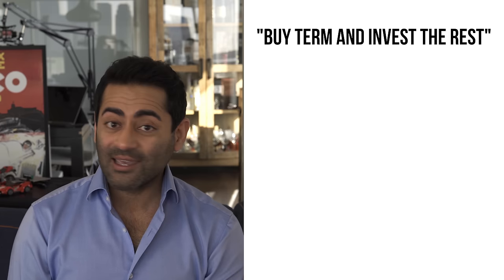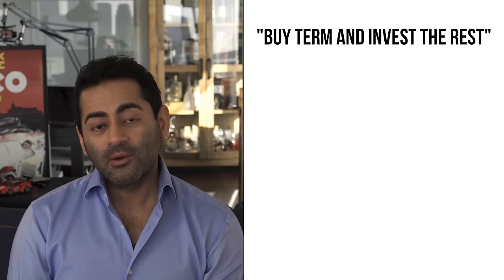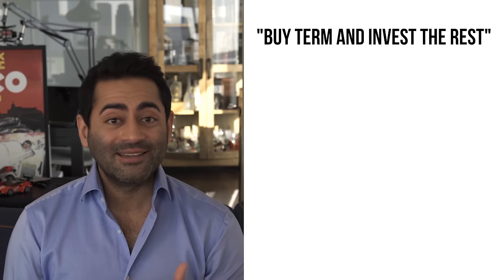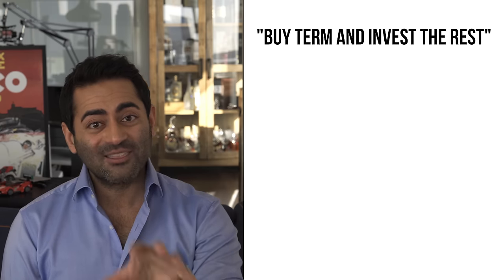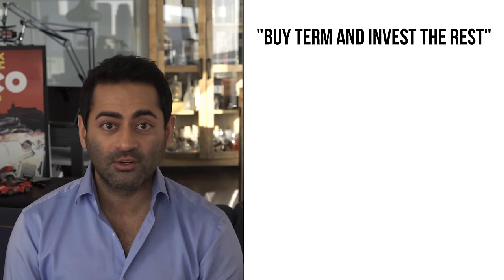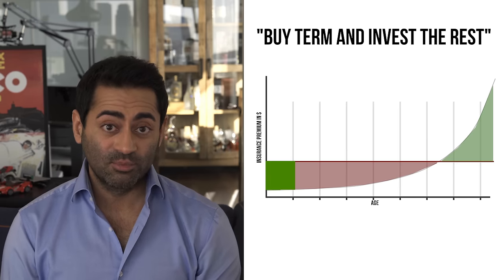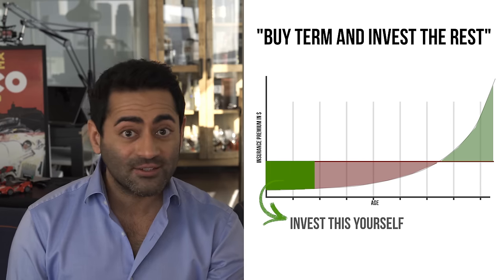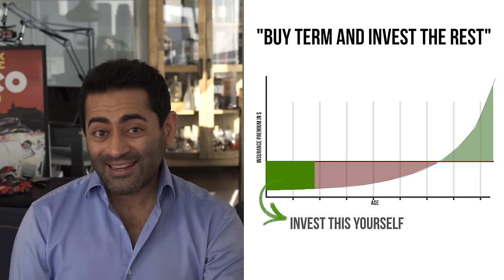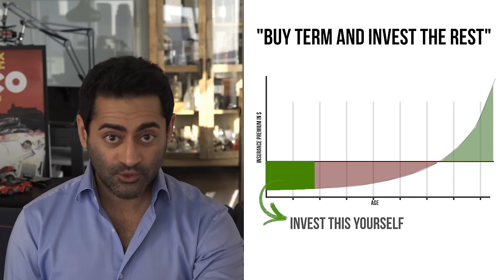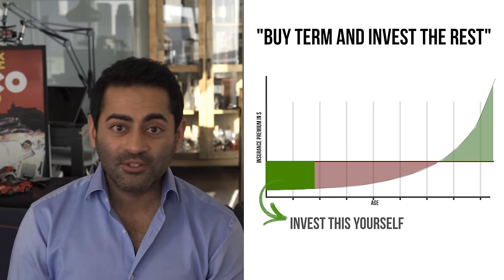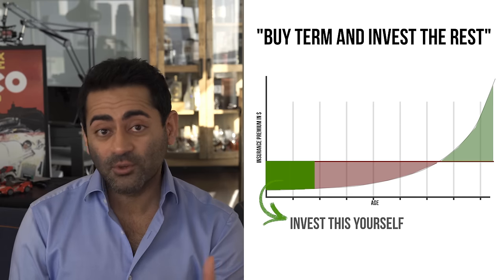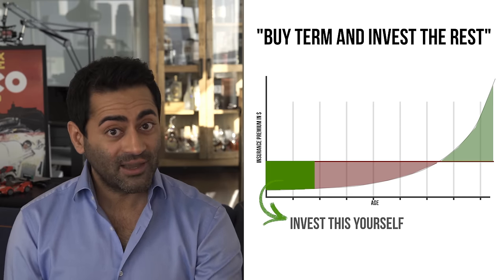And so the idea of 'buy term and invest the rest' became wildly popular. This refers to the strategy of buying a term life insurance policy — which we've seen is much cheaper than whole life for the same death benefit — and taking the difference between the two premiums and investing it yourself. So you're getting the insurance coverage while building up your own reserve over time. At some point, you would no longer need the term life insurance because you would be effectively self-insured.